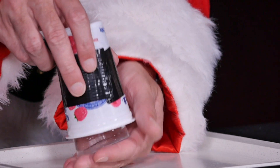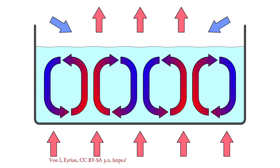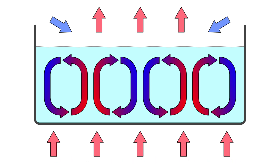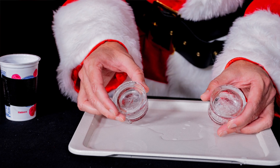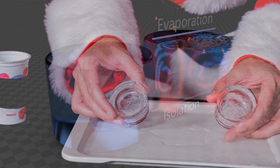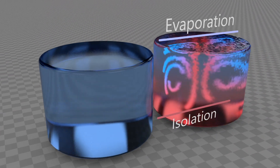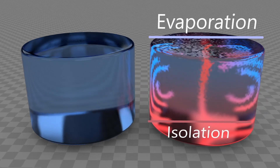Convection cells also form in hot water, so that, for example, water rises in the middle of the cup, flows to the rim at the top and sinks back down to the bottom of the cup. This uneven heat transport ensures that the hot water also freezes unevenly on its surface and the ice forms a wavy pattern, while the cold water freezes evenly and forms a smooth ice surface.